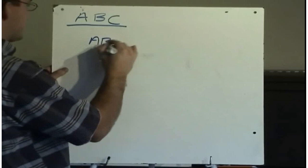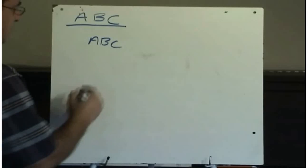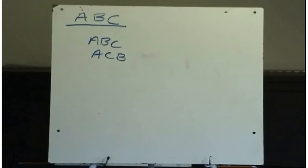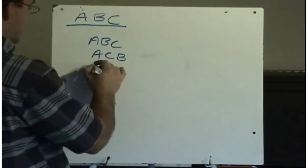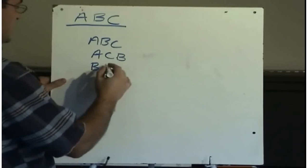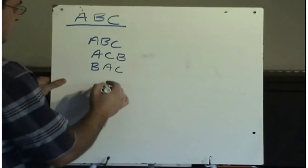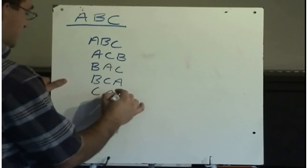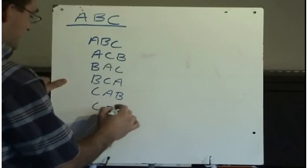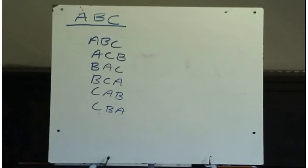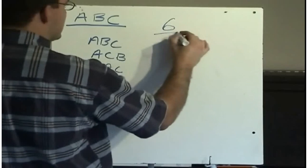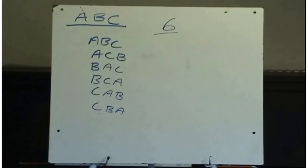Well, obviously one way is just the way it was given: A, B, and C. But I could take the B and the C and switch their order around — there's another permutation. Or instead of starting with A, I could start with B: B, A, C. Or B, C, A. Or start with C and write A and B. I think there we've written all of the permutations, or the total number of ways that you could mix up those three letters. So the number of permutations of the letters A, B, and C are six.